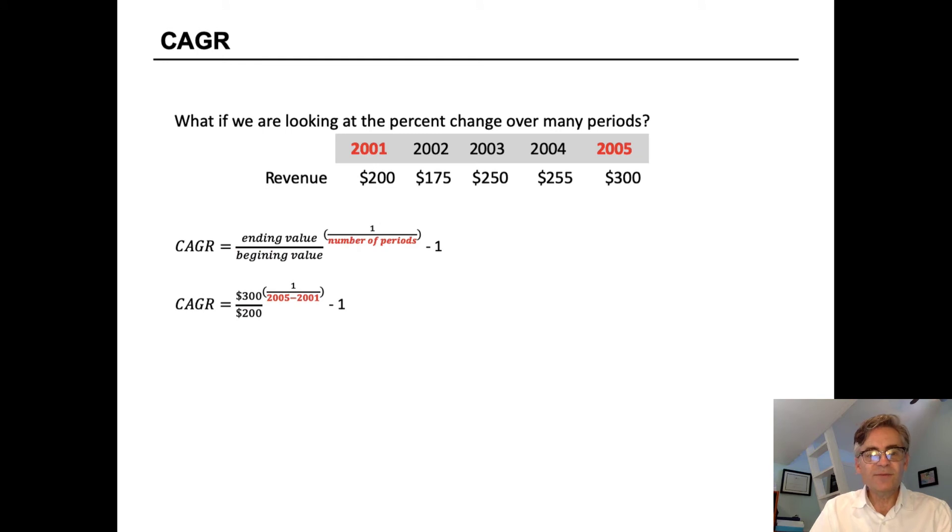For the number of periods, we're looking at 2005 minus 2001, which will give us four periods. So it's 300 divided by 200 raised to the exponent of one quarter, all minus one.